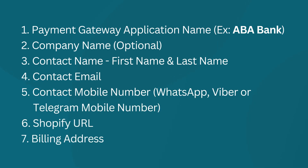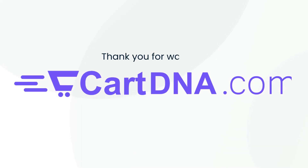Send the following details: one — payment gateway application name, example ABA Bank; two — company name (optional); three — contact name (first name and last name); four — contact email; five — contact mobile number (WhatsApp, Viber, or Telegram); six — Shopify URL; seven — billing address. Thank you for watching.